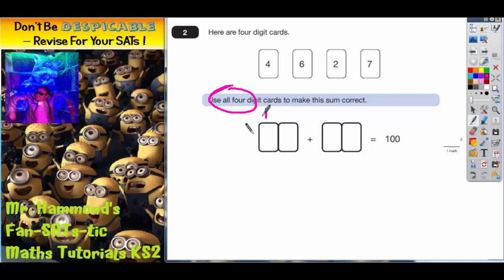So we've got a 2-digit number plus another 2-digit number equals 100. Now we could just do it by trial and error and we'd probably be able to get an answer.